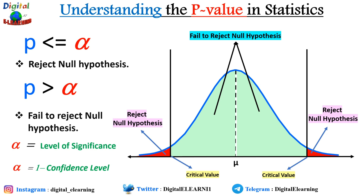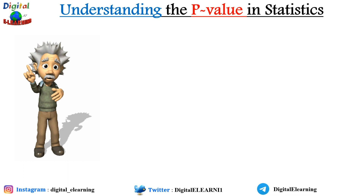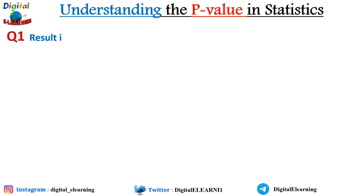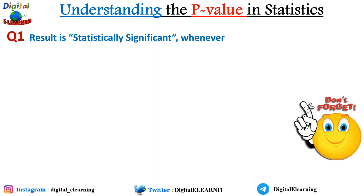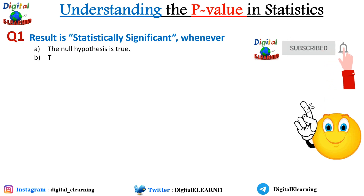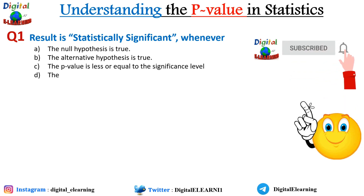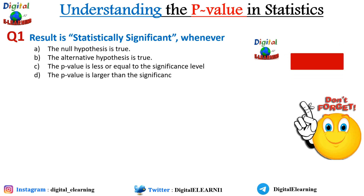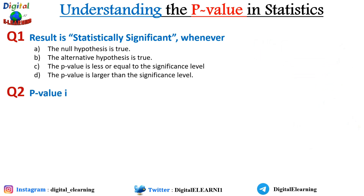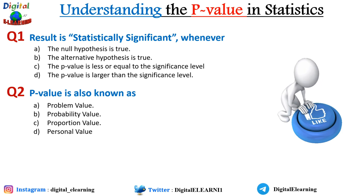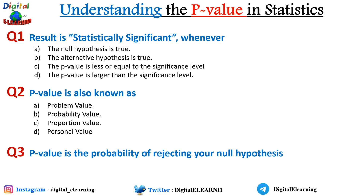Before we start some numerical examples, let us do a quick check to understand how much you understood this concept. First question: the result is statistically significant whenever — a) the null hypothesis is true, b) the alternate hypothesis is true, c) the p-value is less than or equal to significance level, or d) the p-value is larger than the significance level? Second question: the p-value is also known as — problem value, probability value, proportion value, or personal value? Third question: is it true or false that the p-value is the probability of rejecting your null hypothesis? You can leave your answers in the comments section below.